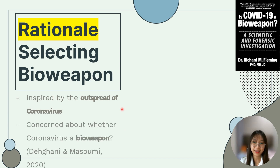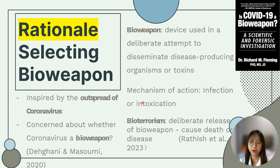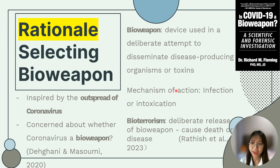The reason for selecting bioweapons as our field is because we were inspired by the outbreak of coronavirus. We were concerned about whether coronavirus is a Chinese bioweapon. So, what is a bioweapon? Bioweapons are devices or agents used or intended to be used in a deliberate attempt to disseminate disease-producing organisms or toxins using aerosols, food, water, or insect vectors. Their mechanism of action tends to be broadly through infection or intoxication. Bioterrorism involves the deliberate release of bioweapons to cause death or disease in humans, animals, or plants.